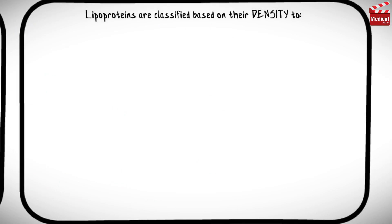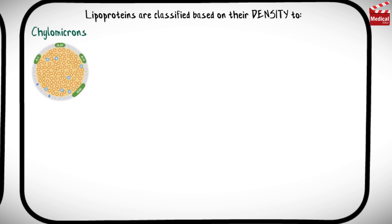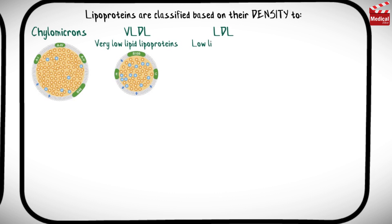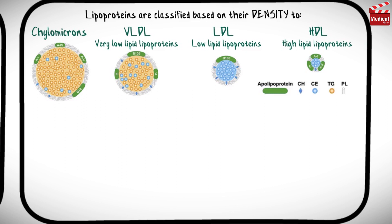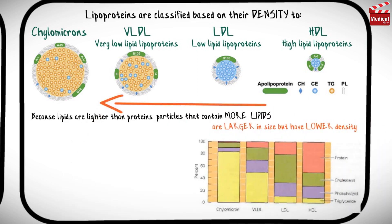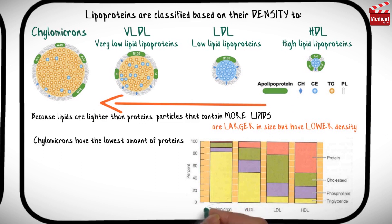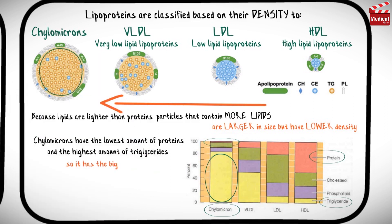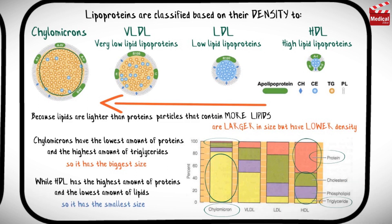Lipoproteins are classified based on their density. Because lipids are lighter than proteins, particles that contain more lipids are larger in size but have lower density. For example, chylomicrons have the lowest amount of proteins and the highest amount of triglycerides, so they have the biggest size. While HDL has the highest amount of proteins and the lowest amount of lipids, so it has the smallest size.